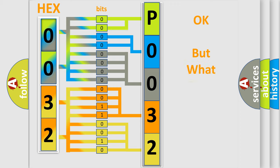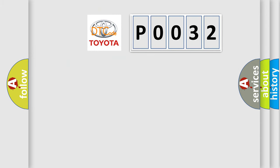We now know in what way the diagnostic tool translates the received information into a more comprehensible format. The number itself does not make sense to us if we cannot assign information about what it actually expresses. So, what does the diagnostic trouble code P0032 interpret specifically for Toyota car manufacturers?